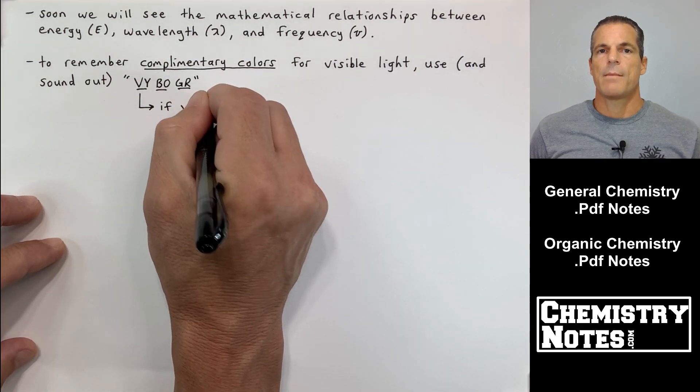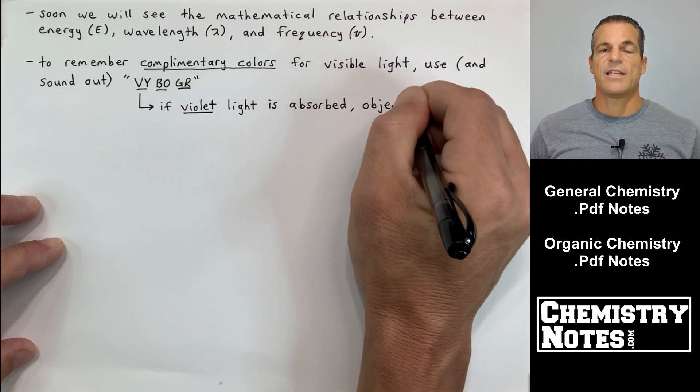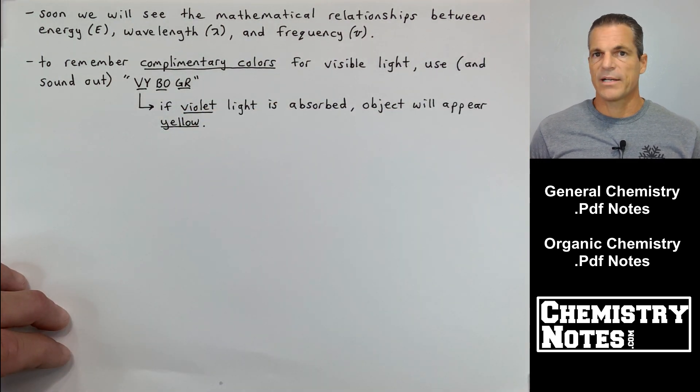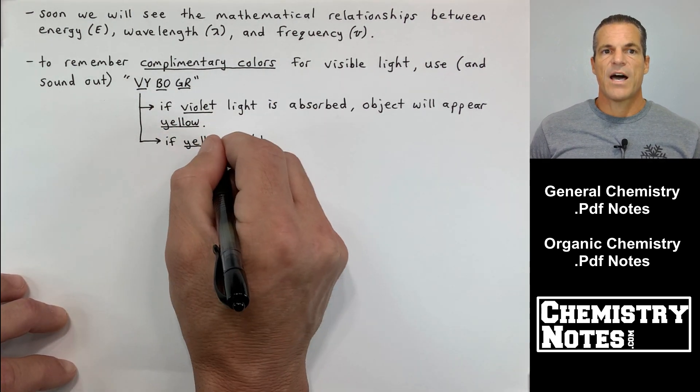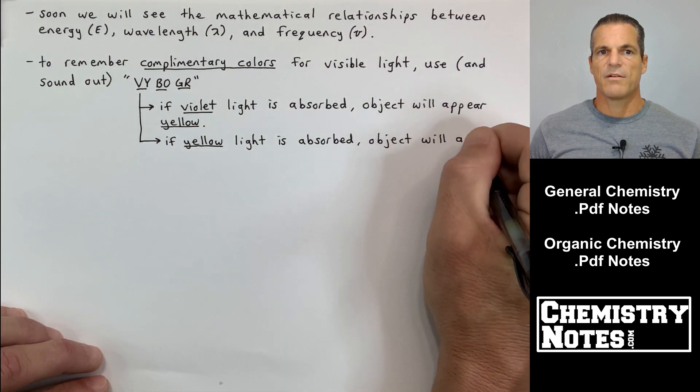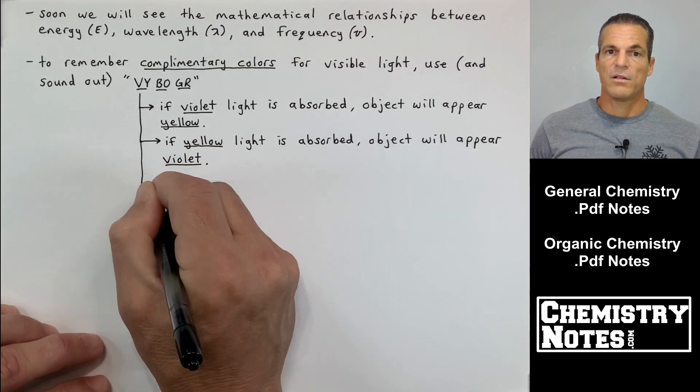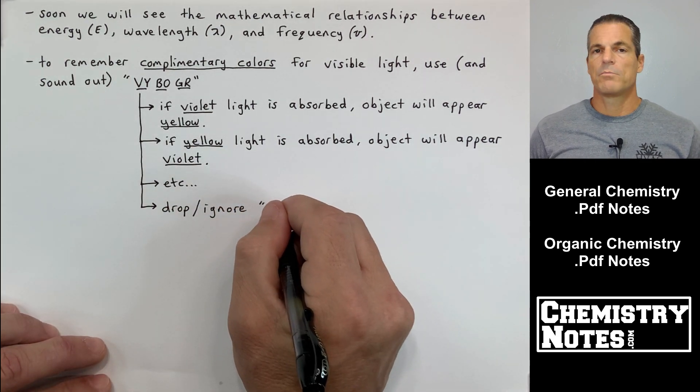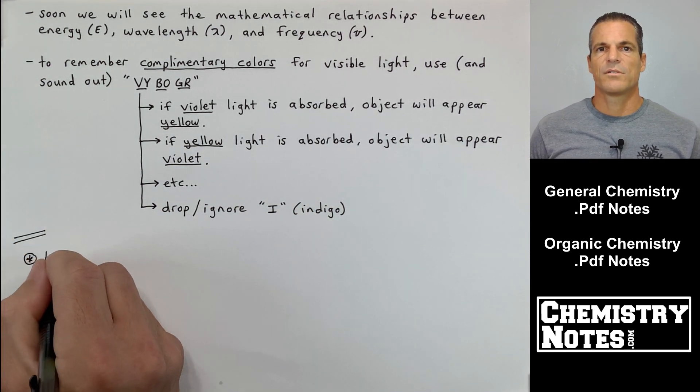To remember complementary colors for visible light, I use the phrase Vy-bo-ger. It's easy to remember Vy-bo-ger. The V and the Y are together, the B and the O together, and the G and the R together. Vy-bo-ger. If violet light's absorbed, the object's going to appear yellow. If yellow light's absorbed, the object will appear violet. Same thing with blue and orange, same thing with green and red. I just drop or ignore indigo for simplicity reasons.